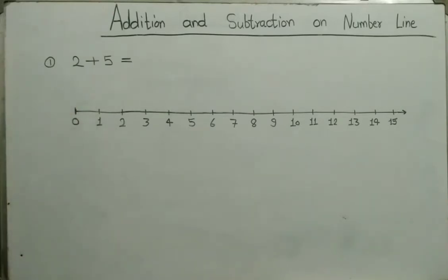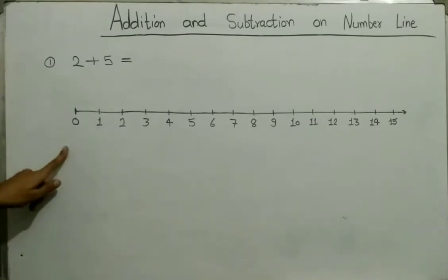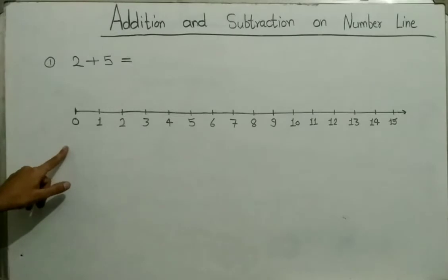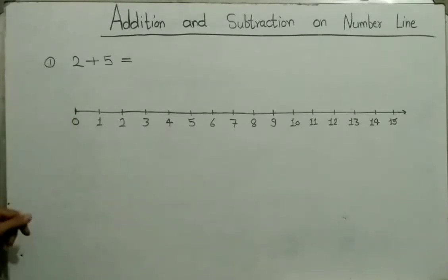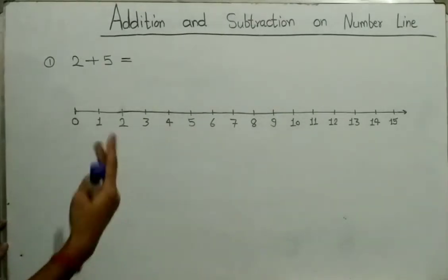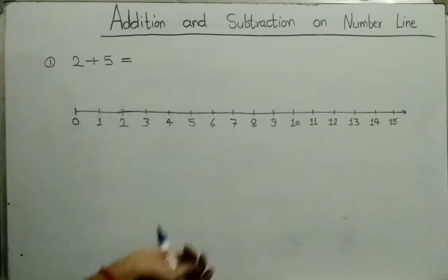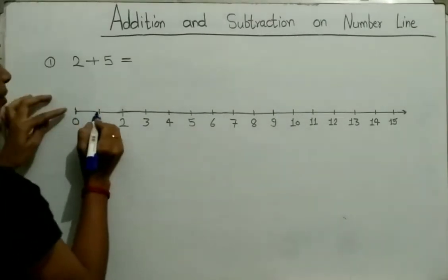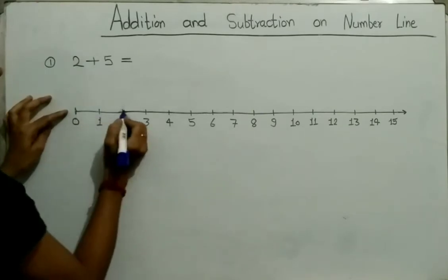First number is 2. So first start from 0 and we will jump 2 steps to the right. We will start from 0 and jump right: 1, 2.